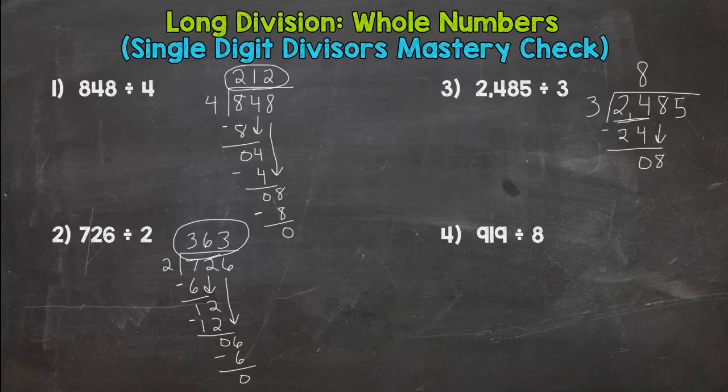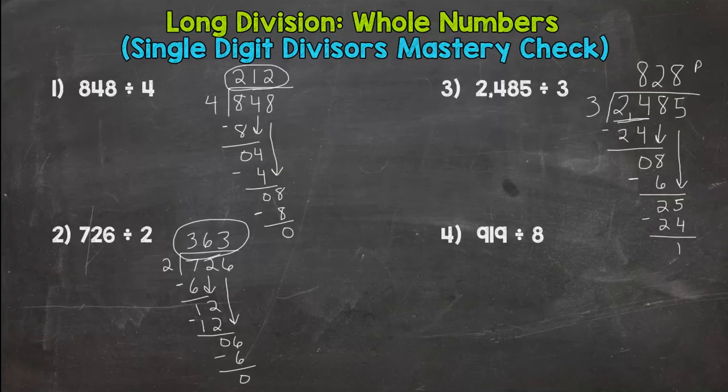How many groups of 3 out of 8? Two. Two times 3 is 6. Subtract, I get 2. Bring down my 5. So how many groups of 3 can I pull out of 25? That would be 8. Eight times 3 is 24. 24 was as close as I could get there. I did not hit it exactly. That's okay. We have 1 left over. 828 remainder 1.